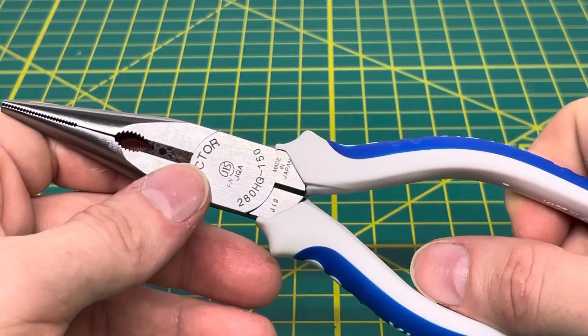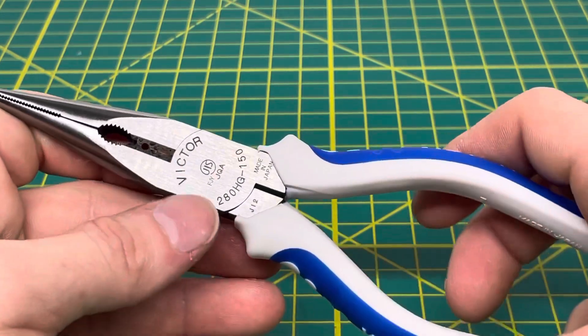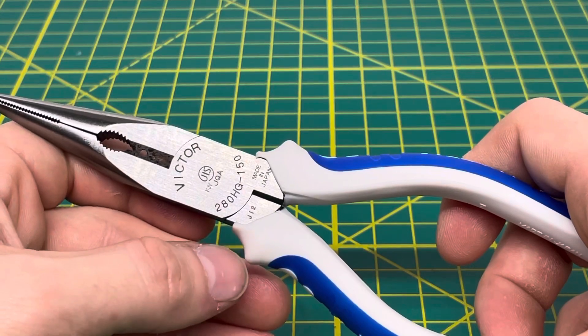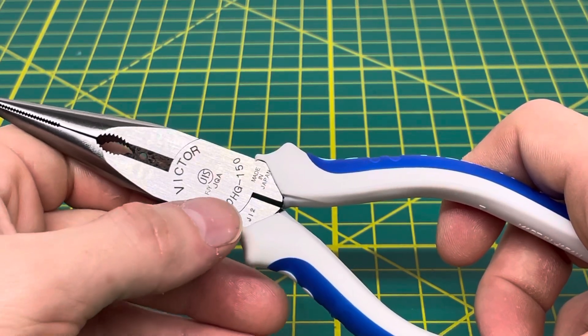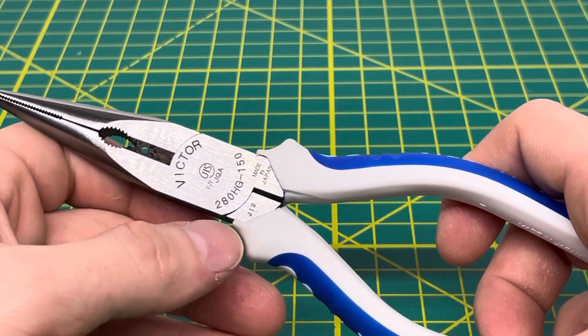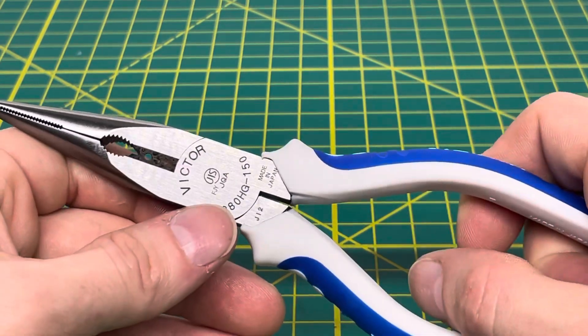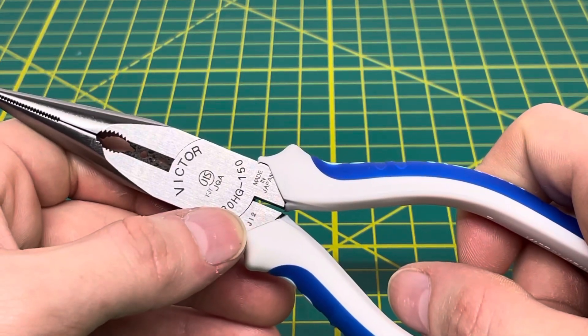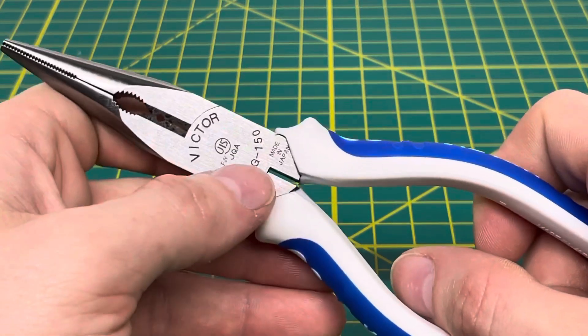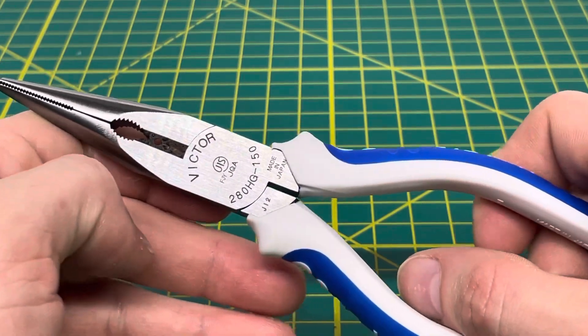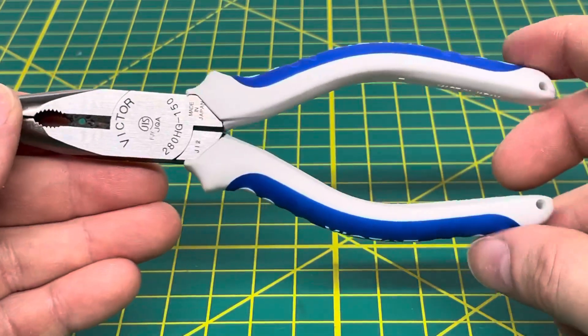So the quality and finish on them is going to be super nice and comparable to some of the higher made in the USA tools and some of the made in Germany tools as well. You have the Victor name laser etched onto the surface of the tool. You have your 280HG-150 part number right there as well. You have some other markings laser etched onto the tool as well, I believe those are on the rivet themselves. And you have, I believe, the manufacturing code right there. And then you have made in Japan laser etched onto that part of the plier right there as well.